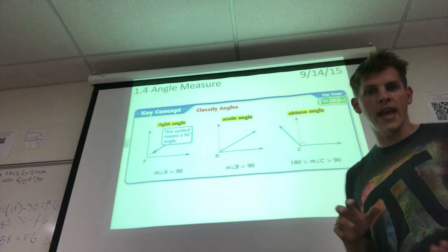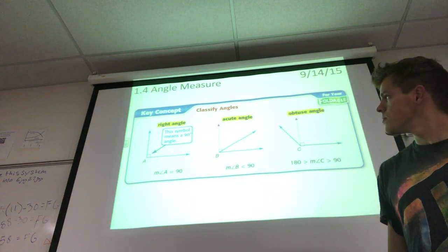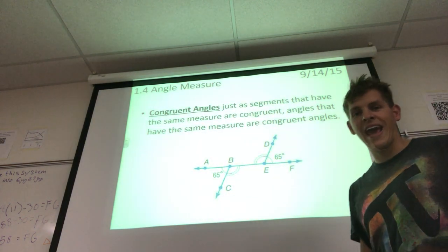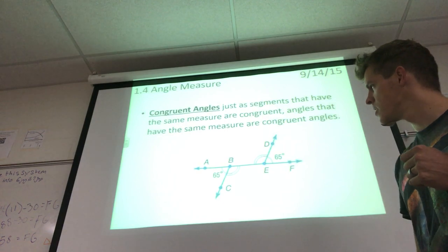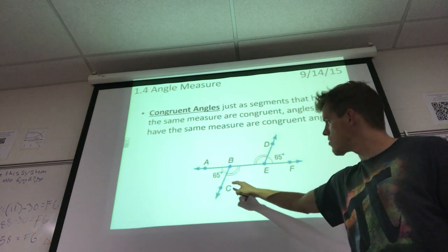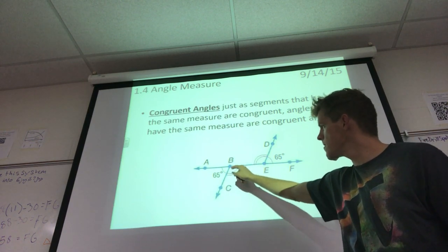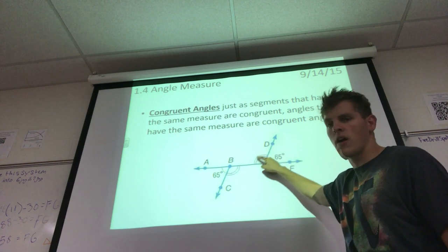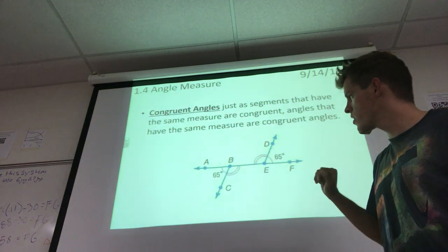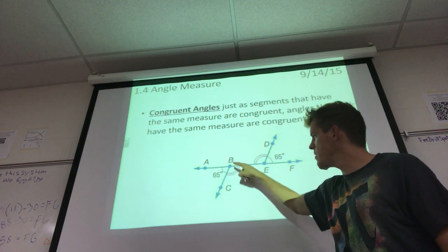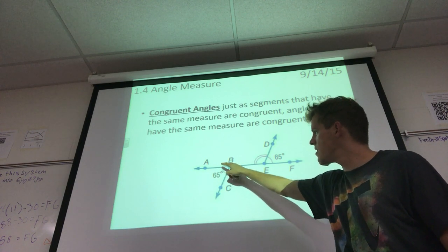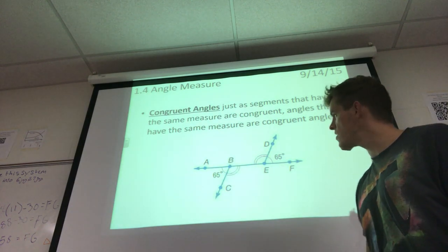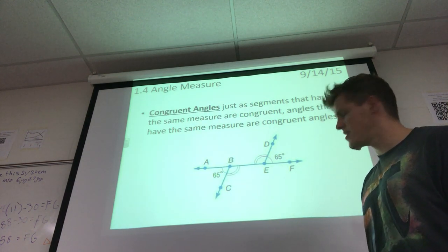Congruent angles: just as segments that are the same measure are congruent, angles that are congruent also have the same measure. A way that we will be drawing that is we can see ABC right here has two arcs in it, and BED also has two arcs in it, so we can say that those two are congruent. ABC is 65 degrees and that's 65 degrees, they're also marked with a single line.